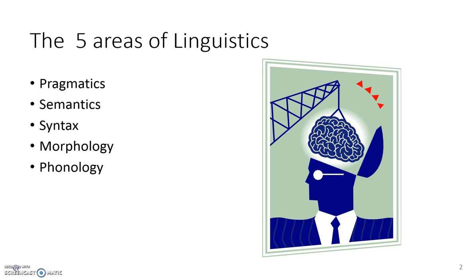Morphology looks at the individual parts of words, and remember here by words I also mean signs. So morphology would take a word like 'reestablishment' and notice that the part 're' means something, the part 'establish' means something, and the part 'ment' means something. Similarly, morphology might look at a sign and notice that the direction of the sign means something as well as the handshape. If you change the direction the meaning can change; if you change the handshape the meaning can change. These are the morphemes of the language.